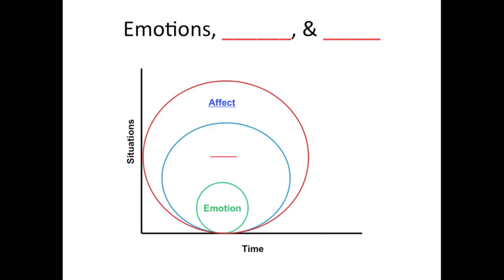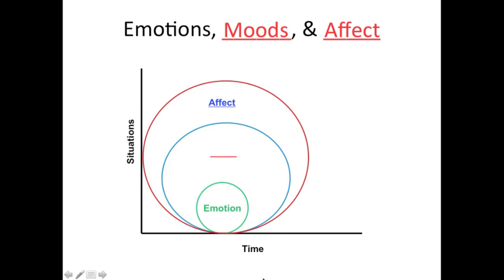Here we have a model that arranges emotions, moods, and affect. At the very bottom, an emotion is a fleeting or transitory physiological reaction to something — it doesn't last long and doesn't travel well from one situation to another. We can really enjoy chocolate ice cream, but five minutes later, stepping on gum on the sidewalk, all that positive emotion goes away. Emotions don't last long and don't travel well from one situation to the next.